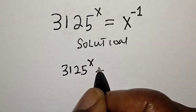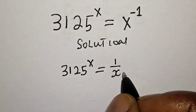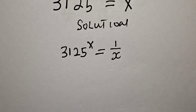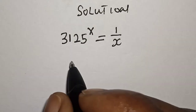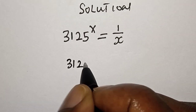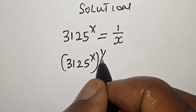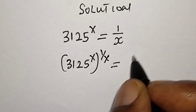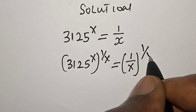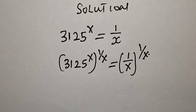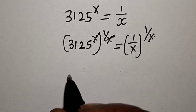We have 3125 raised to power s is equal to s raised to power minus 1, which can be written as 1 over s. Let's multiply the power of both sides by 1 over s: that is 3125 raised to power s, multiplied by 1 over s, is equal to 1 over s multiplied by 1 over s.